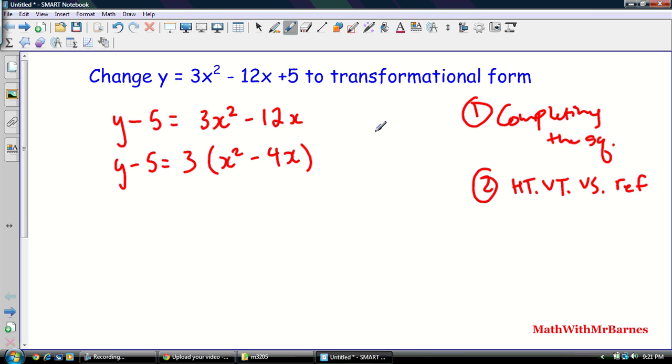Now we need to use our formula that we learned about what value of C here will make this a perfect square trinomial. So, if you remember, C is equal to B divided by 2 all squared. So what value of C here makes this a perfect square trinomial, and a perfect square trinomial is one that factors into the form x minus something all squared. So let's just do that, so y minus 5 is equal to 3, x squared minus 4x, and my B value is B divided by 2, that's 2, squared would be 4. So positive 4.